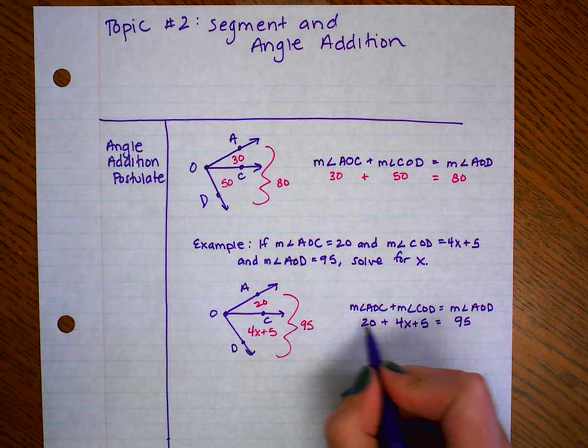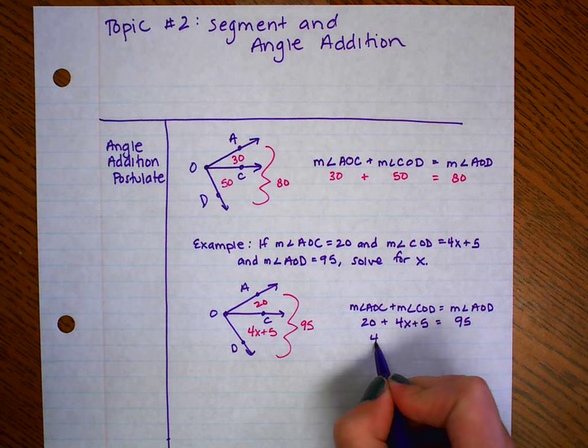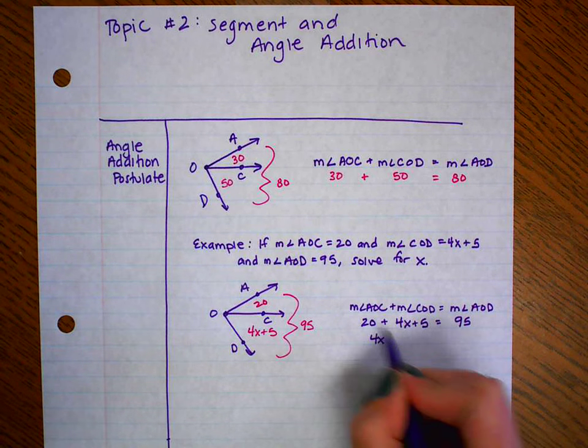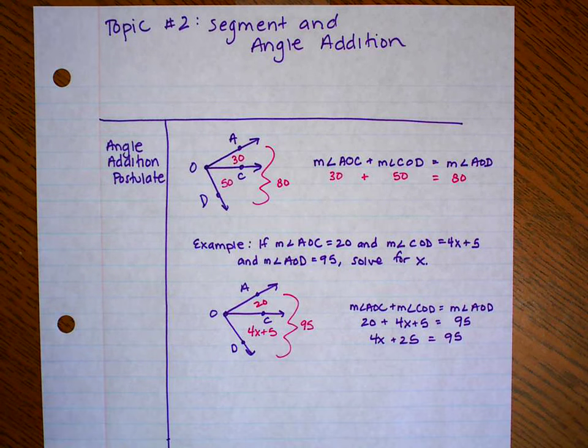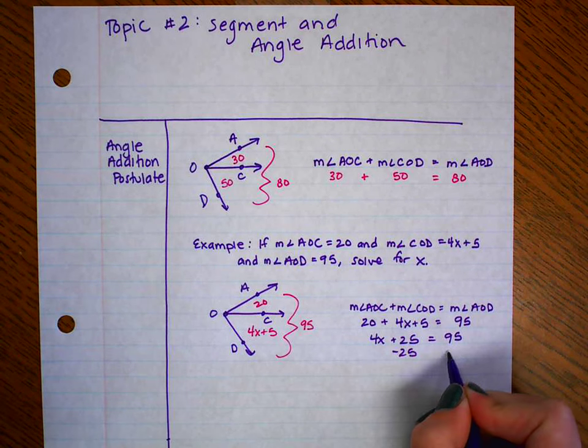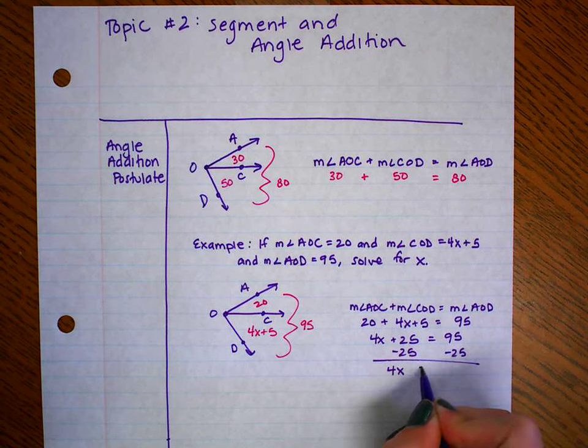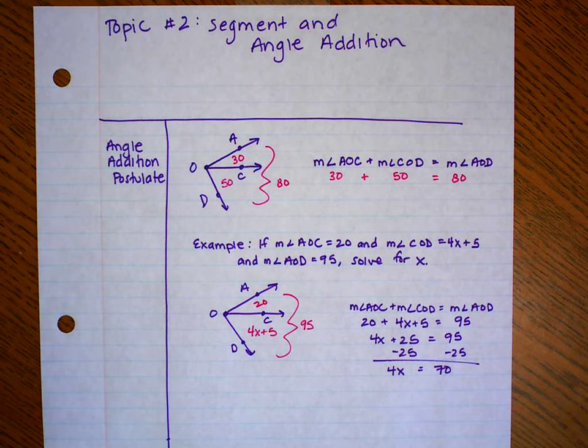Well, now we can solve algebraically. So I'm going to combine my like terms. So I have 4X, the 20 and the 5 combined to 25. Now I'm going to subtract 25 on both sides.